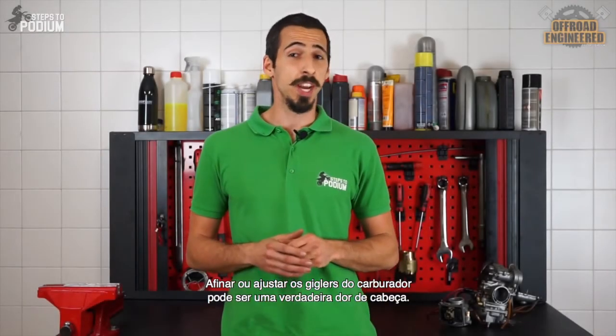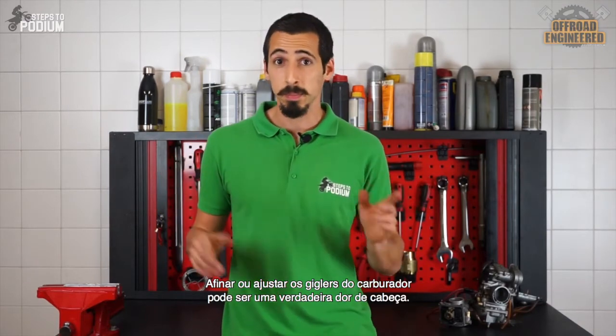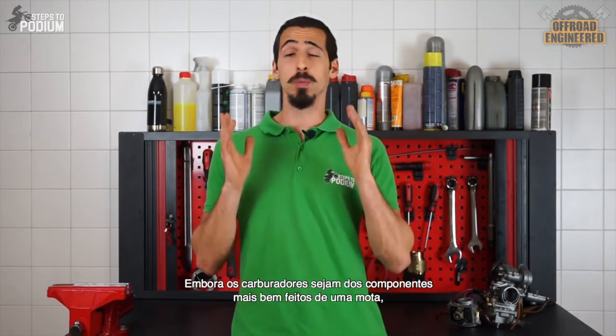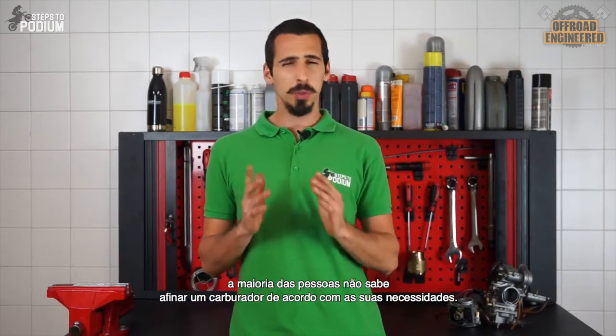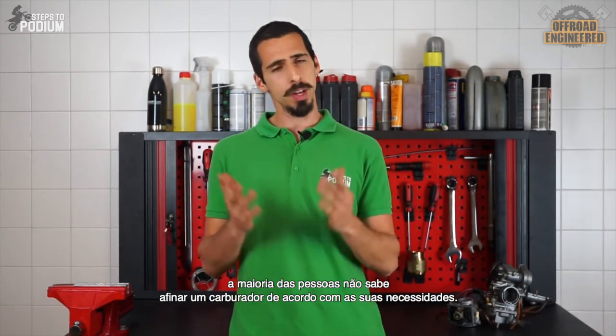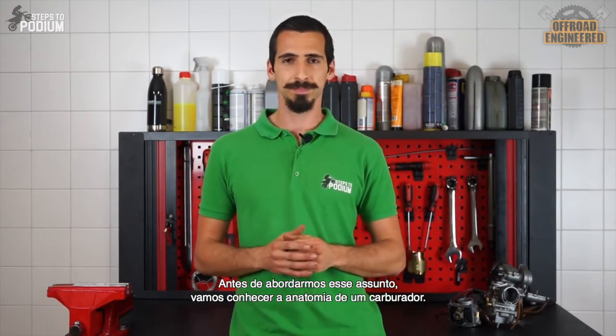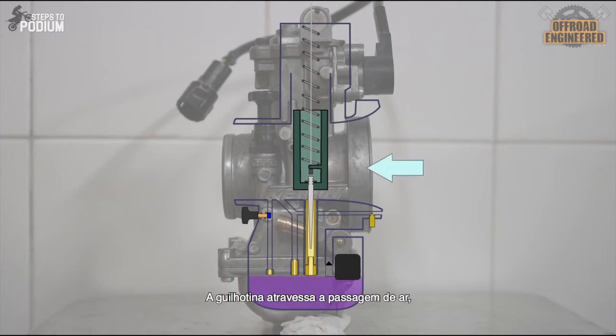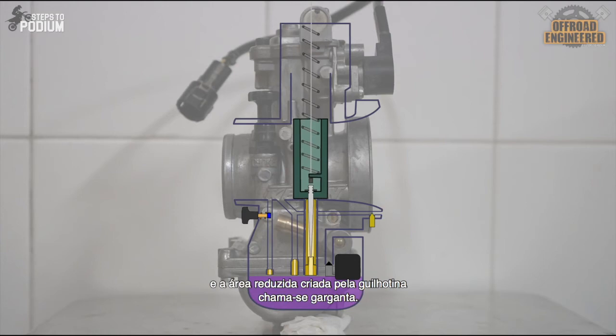Tuning and fiddling with the jetting of your carburetor is often seen as a complete headache, but it doesn't have to be. Although carburetors are one of the most well-designed and engineered components of a dirt bike, most people don't really know how to jet a carb to their needs. First things first, let's understand the different components of a carb. From the air filter to the inlet manifold, there's the main air passage. The slide crosses the main air passage and the reduced cross section created by the slide is called the throat.